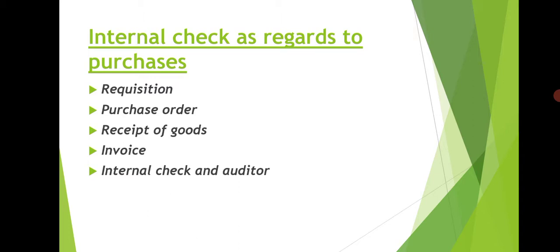Regarding internal check and the auditor: since the nature and scope of an auditor's work depend upon the system of internal check in operation, the auditor should examine the features of the internal check system and determine whether it is satisfactory or defective. If the existing system of internal check is sound, the auditor need not undertake detailed checking of all transactions and may apply test checks. However, if the system is defective, the auditor should carry out detailed checking of all transactions.